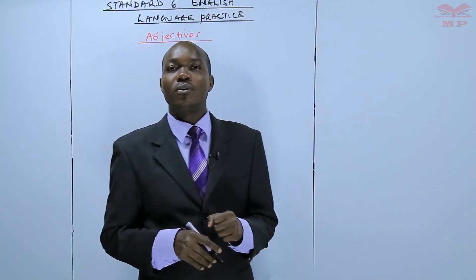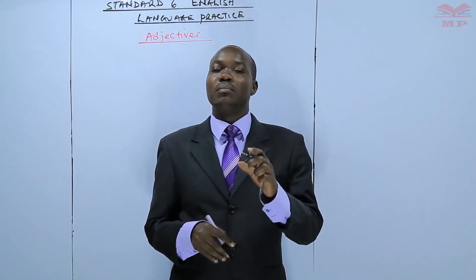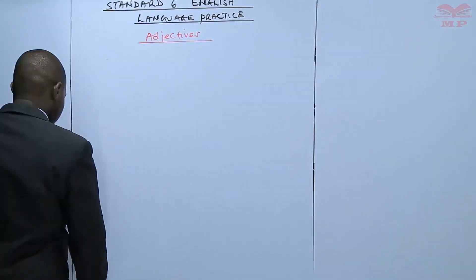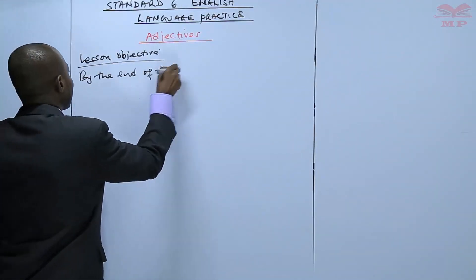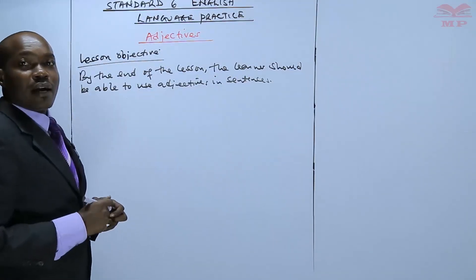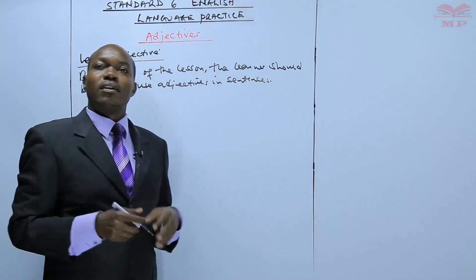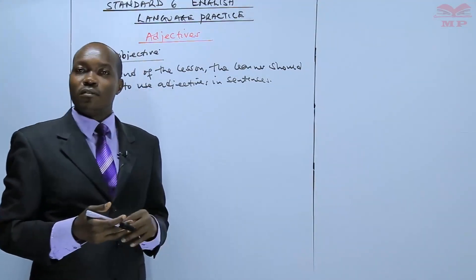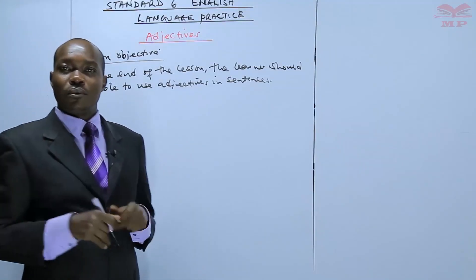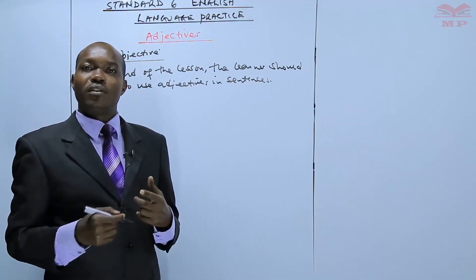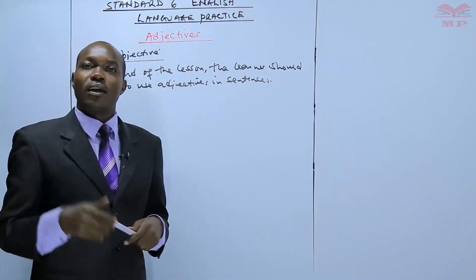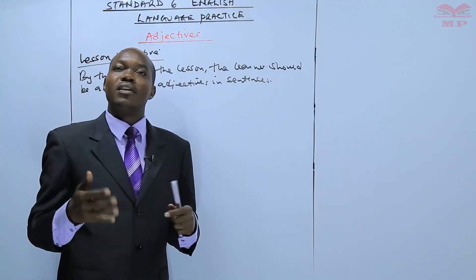In today's lesson, we're going to learn about adjectives. So that will be the lesson objective. I want to begin by defining what an adjective is. An adjective is a word that describes a noun. And what's a noun? A noun is a naming word.